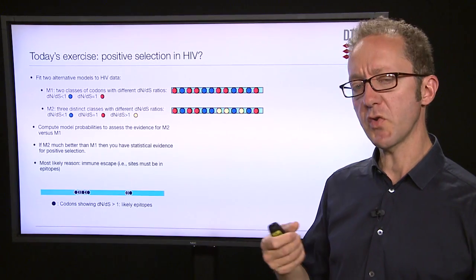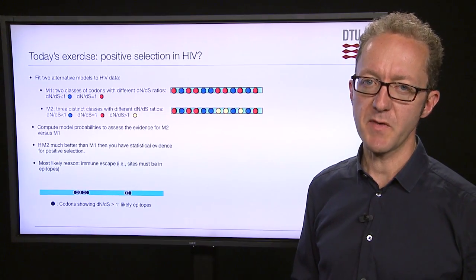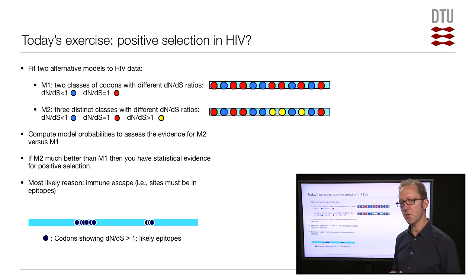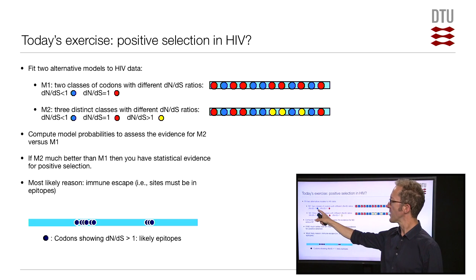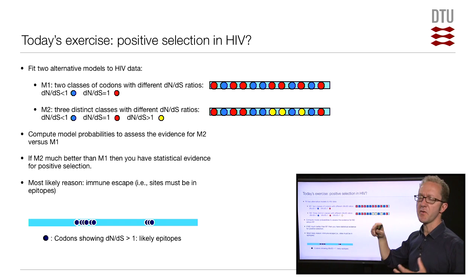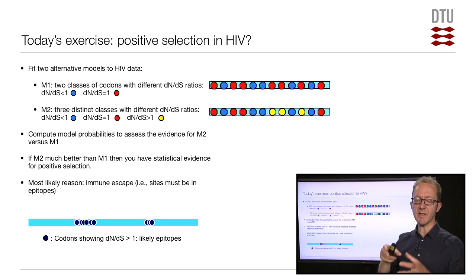So we will fit two alternative models to the HIV data that we have in our dataset. Model 1, the first hypothesis we will consider about our sequences, is one in which we have two different classes of codons with different DN-DS ratios. Now, before I get started on explaining that, in principle, every single codon in a sequence probably has its own DN-DS ratio. So there's likely to not be exactly the same selective pressure on every single codon in a sequence. So in principle, we could make a model where every single codon in the sequence would have its own DN-DS ratio. But as I explained previously, more parameters will give you a better fit, but it might lead to overfitting.